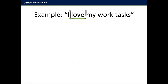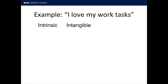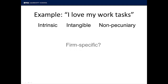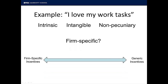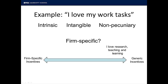Consider, for example, the intrinsic value that comes from loving your work tasks. From the perspective of extant categorizations, this is clearly intrinsic because it comes from within the person, it is intangible because there's no material component, and similarly it's non-pecuniary. But is it firm specific? We just don't have enough information yet. Let's say you love your professorial work tasks such as researching, teaching, and learning. Your love for these activities can be very motivating and can clearly impact your performance. But you can engage in these activities at any research-oriented university — this incentive is more tied to your profession than to your institution. Thus, this is an important but quite generic incentive.